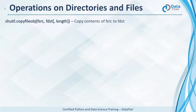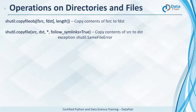copyfileobj copies a file-like object's contents to another. It remembers where you stopped reading and starts copying from that position. copyfile does not copy permission bits, and it internally uses copyfileobj. If the source and destination are the same, it raises a SameFileError.